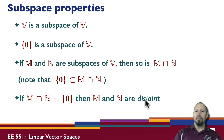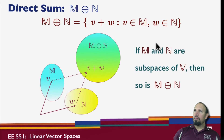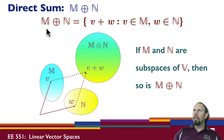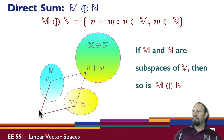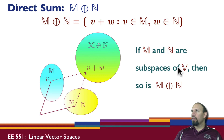If the intersection of two subspaces has only the zero element in it, then those two subspaces are said to be disjoint. With subspaces, if you have two subspaces M and N, we can define their direct sum as the set of all vectors v plus w, where v is in M and w is in N. The vectors in this direct sum are the sum of vectors from M and N, and if M and N are both subspaces of the vector space, then the direct sum is also a subspace.